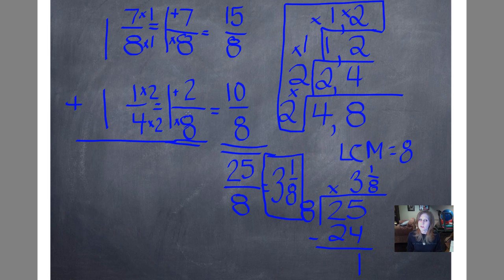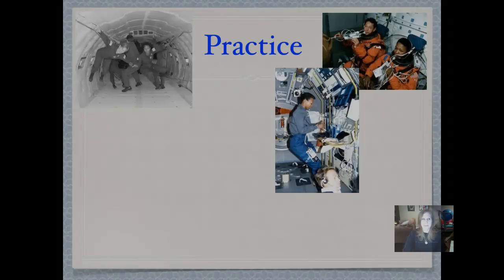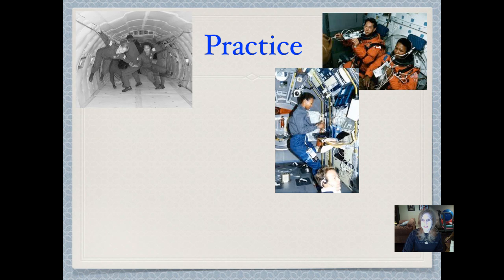Now, the reason I did it this way is so that you're not having to borrow and carry from this whole number. When you convert to an improper fraction, it makes it a little bit easier. Because if I had done 7 plus 2 is 9, I would have had, and 1 plus 1 is 2, I would have had 2 and 9 eighths. And I still would have had to convert from an improper fraction, but I would have had to carry some whole numbers over.